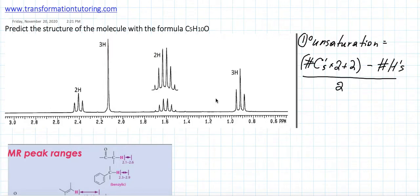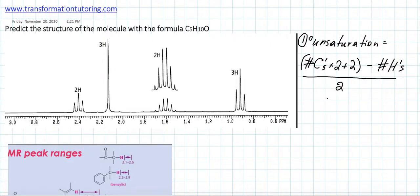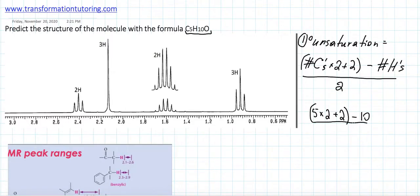We need to predict the structure of the molecule with the formula C5H10O. First, we need to figure out the degrees of unsaturation, which tells us if we have any double bonds or rings. The formula is: (number of carbons × 2 + 2 − number of hydrogens) ÷ 2. For C5H10O: (5 × 2 + 2 − 10) ÷ 2 = 12 − 10 ÷ 2 = 1.